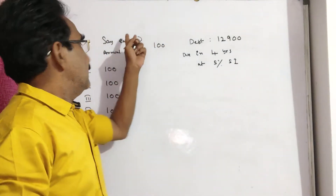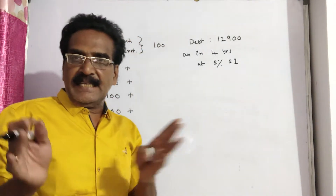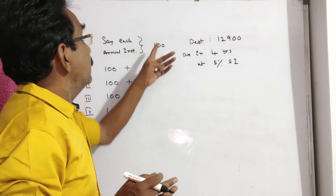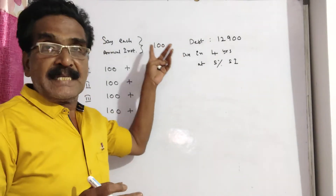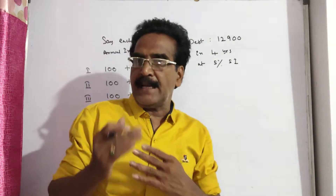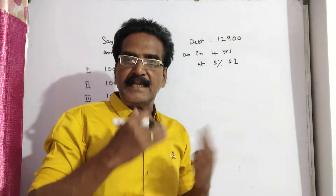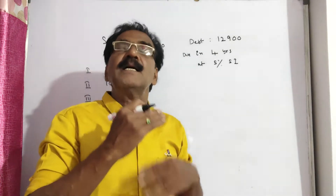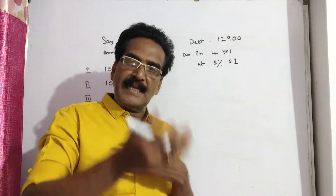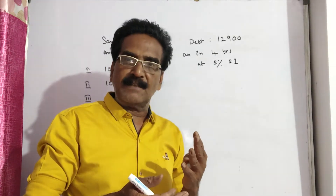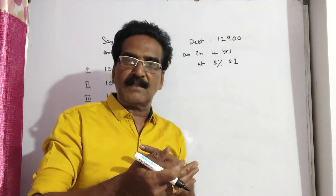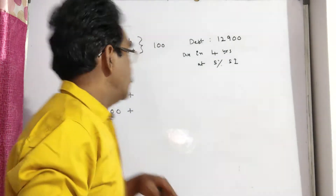Friends, let us say the actual annual installment is Rs 100. That means you pay Rs 100 at the end of the first year, another 100 at the end of the second year, another 100 at the end of the third year, and the last 100 at the end of four years.